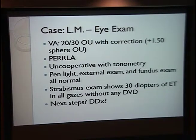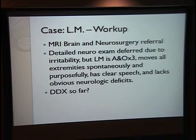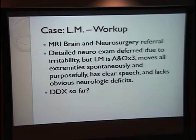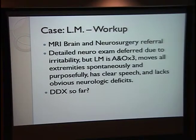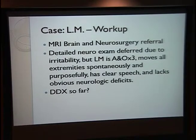The next steps in diagnosis: we did further workup because his dad reported clumsiness and we were concerned about neurologic processes. We went ahead and ordered an MRI of the brain, which is one of the more common neuroimaging studies for eye manifestations — as opposed to CT head, which is better for viewing strokes, bleeds, and fractures. MRI is good for looking at soft tissues; it shows you the eye muscles, the optic nerve, and areas of the optic tract and pathway. The detailed neuroexam was limited because the patient was not cooperative, but he was alert and oriented, able to move all extremities spontaneously and purposefully, had clear speech, and lacked major neurodeficits. More or less the neuroexam was normal as far as it could be conducted.